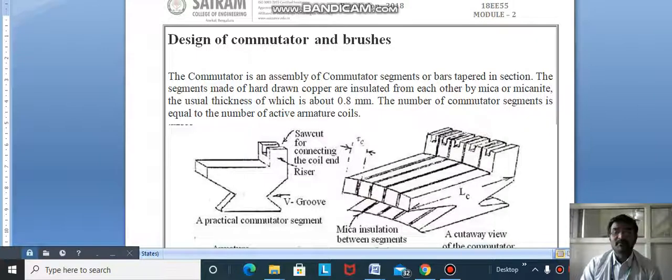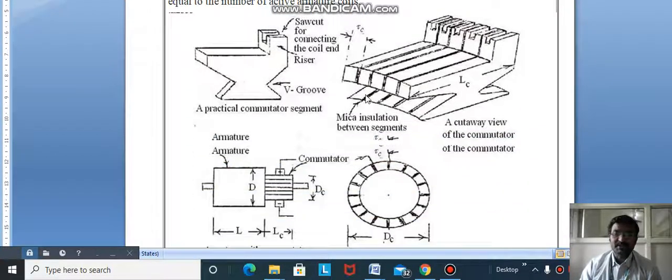The number of commutator segments is equal to the number of active armature coils, that is very important. Mica insulation will be present between the commutator segments.